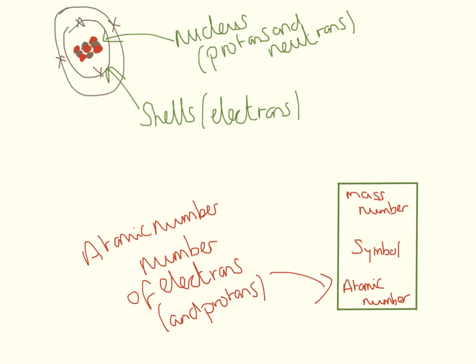When we look at the periodic table, we're going to have a symbol, a mass number, and an atomic number. The atomic number is the one we're interested in today. The atomic number tells us the number of protons, and it also tells us the number of electrons.